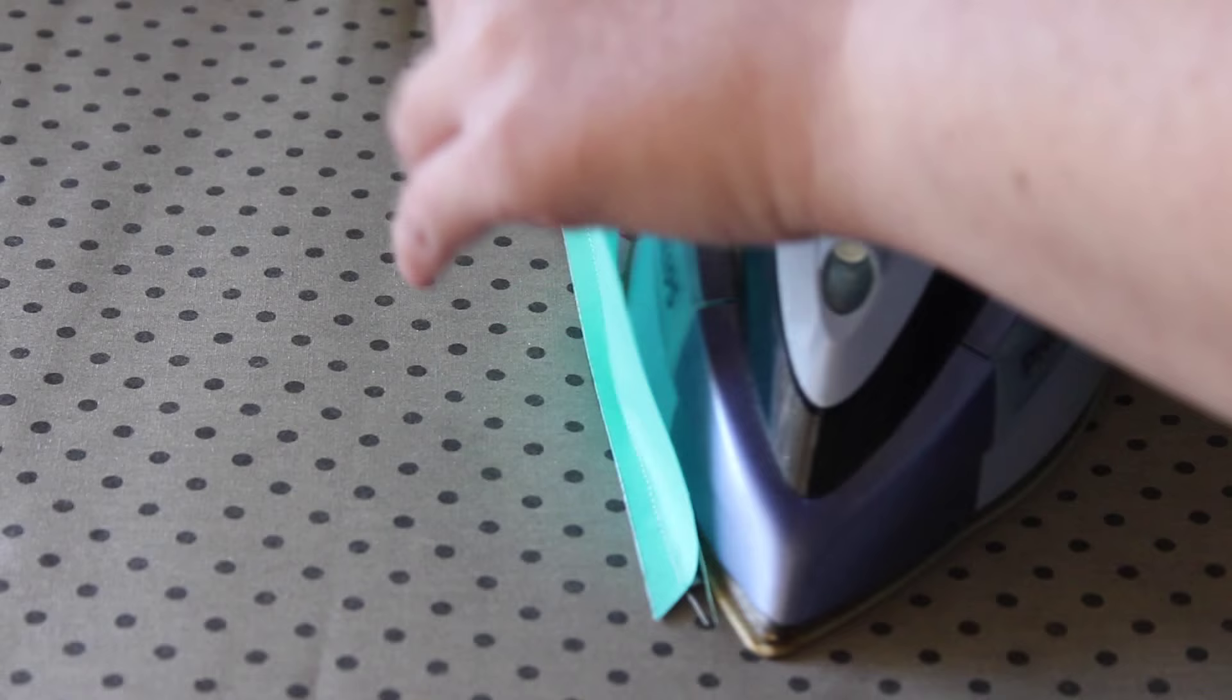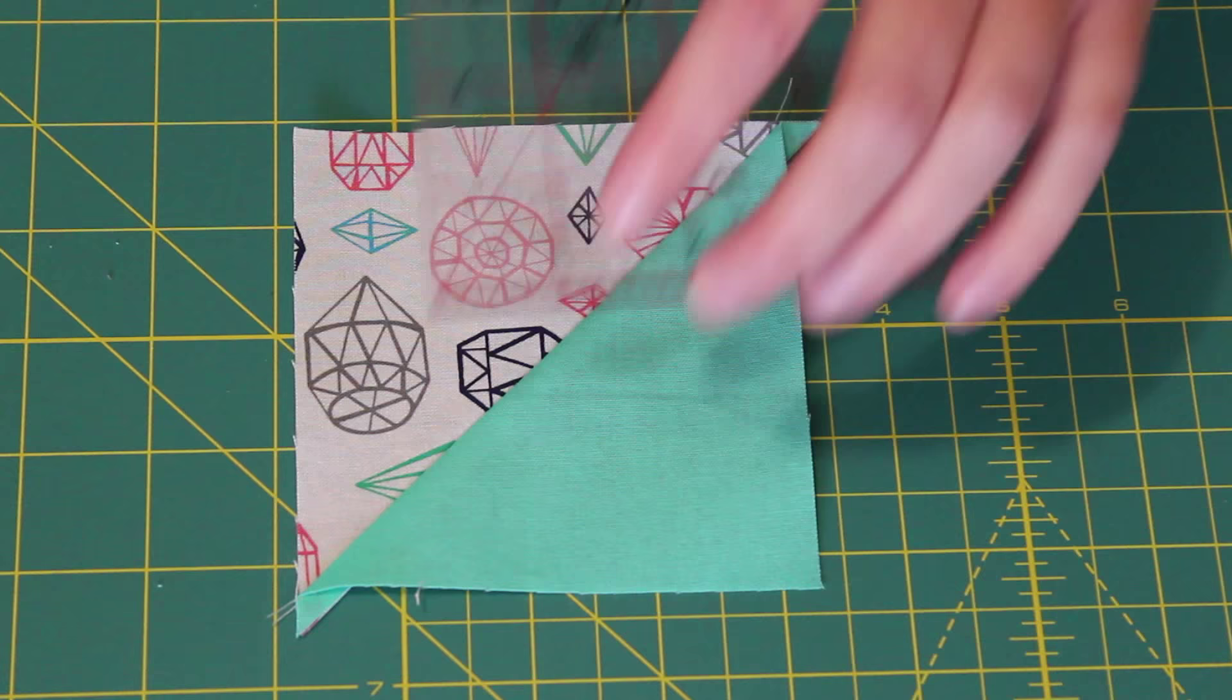Next, press each seam towards the darker side of fabric using a medium to hot steamy iron. Using a set square, trim all four half square triangle units to a precise 4 inches.